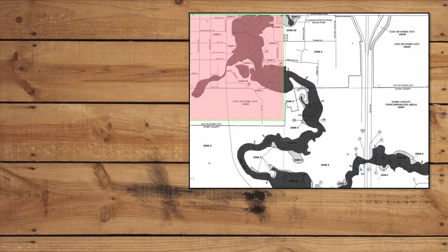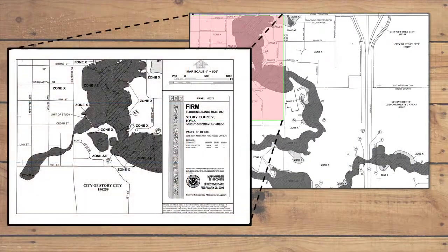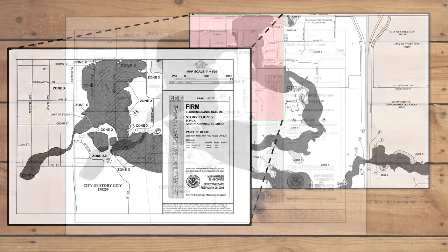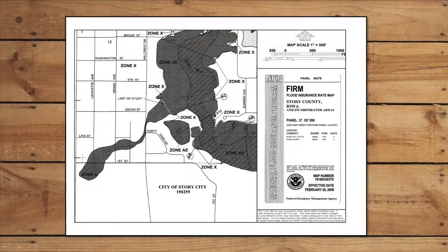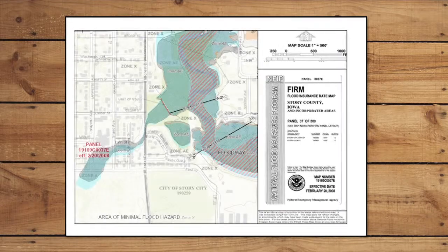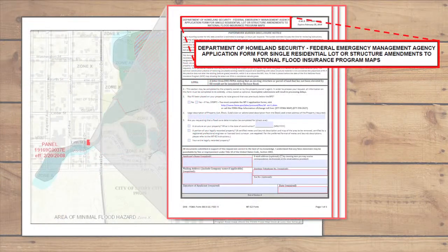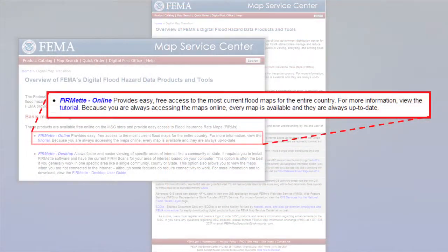A FERMET is a section of a FIRM that you can print directly from the Map Service Center. Because a FERMET is a same-scale snapshot of an official NFIP flood map, it can be used for any legal purpose under the NFIP, such as when a copy of a flood map section is required for a letter of map change. The Map Service Center offers users the option to create a FERMET free of charge.